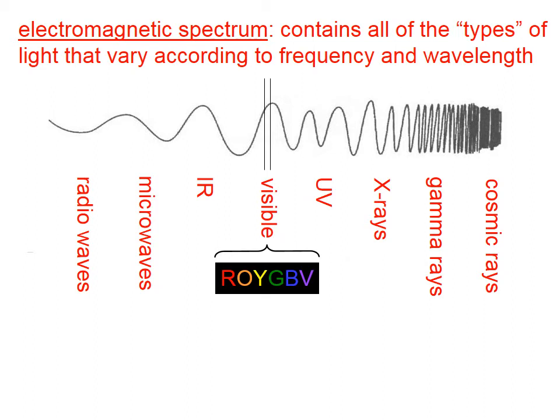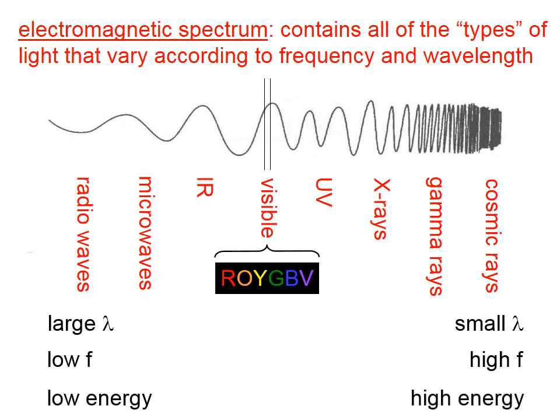So on the left end of the spectrum, we have large wavelengths, and the right end of the spectrum, small wavelengths. The left end represents low-frequency radiation, and on the right, we have high-frequency radiation. Radio waves, thus, have low energy, and cosmic rays, gamma rays, those kinds of things, have high energy.